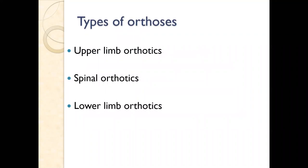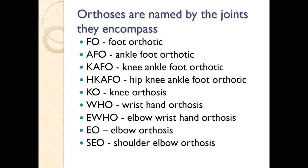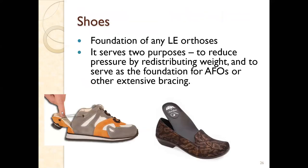Orthotics are usually named by the joints they encompass. FOs are foot orthotics like shoe inserts. AFOs are ankle-foot orthotics. KAFOs are knee-ankle-foot orthotics. HKAFOs are hip-knee-ankle-foot orthotics. KOs are knee orthotics. WHOs are wrist-hand orthoses. EOs are elbow orthoses. SEOs are shoulder-elbow orthoses. Foundation of any lower extremity orthotic starts at the foot, serving to reduce pressure by redistributing weight and as the foundation for AFOs or other extensive bracing.